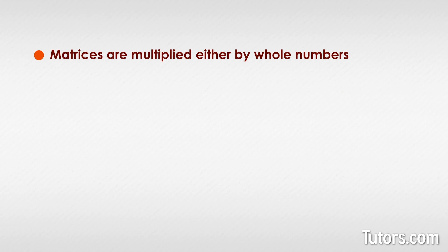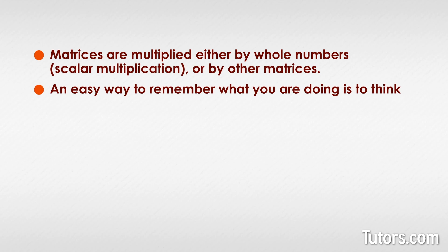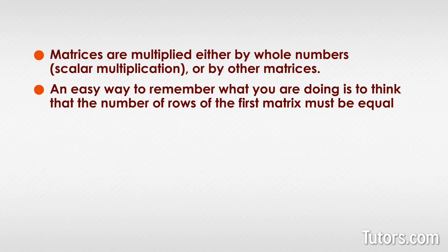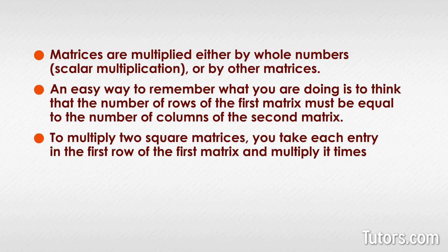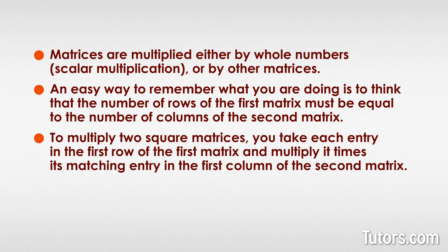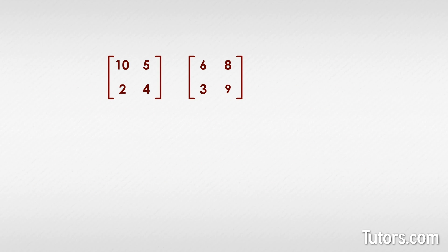Square matrices can also be multiplied. Matrices are multiplied either by whole numbers, called scalar multiplication, or by other matrices. An easy way to remember what you are doing is to think that the number of rows of the first matrix must equal the number of columns of the second matrix. For square matrices, this is already taken care of.